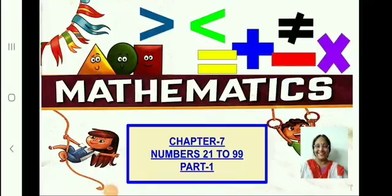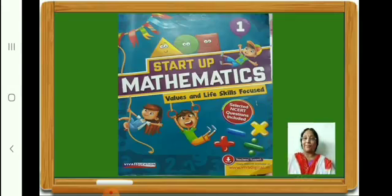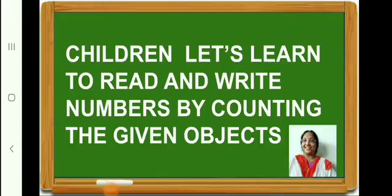Hello children, Sairam. Today we are going to learn a new chapter in mathematics — Chapter 7, Numbers 21 to 99. All of you, take out your mathematics textbook, pencil, and an eraser. Ready? Very good. Let us learn to read and write numbers by counting the given objects. Open your mathematics textbook to page number 88, Chapter 7, Numbers 21 to 99.